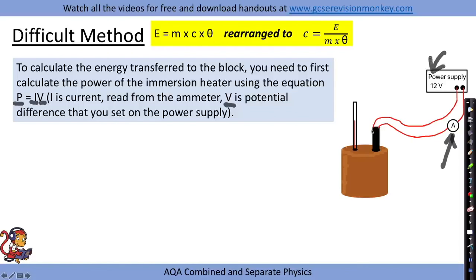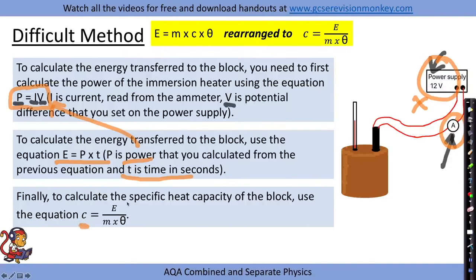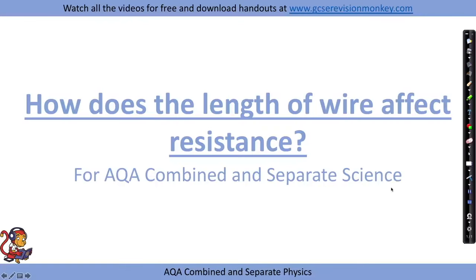To calculate energy without a joule meter, first use P = IV, where I is the current from the ammeter and V is the potential difference set on the power supply, to calculate power. Then use E = P times t, where t is the time in seconds the immersion heater was heating the block, to calculate energy transferred. Finally, put these values into the rearranged equation: specific heat capacity equals energy divided by mass times temperature change.